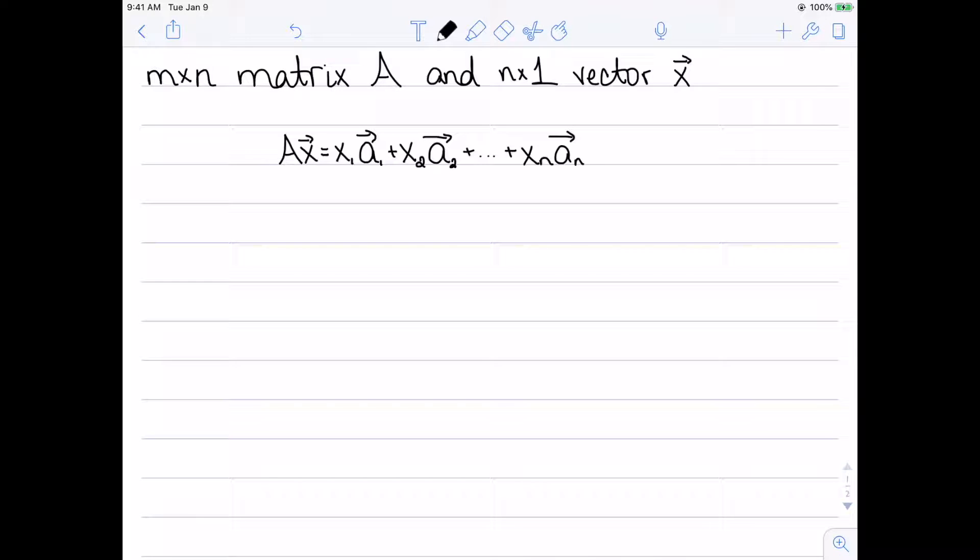So we define matrix vector multiplication like this. A times the vector x is x1 a1 plus x2 a2 all the way up to xn an. The x's are going to be the entries of our vector x, and the a's are the columns of my matrix A.